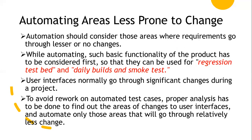We need to automate areas that are less likely to change — that is, concentrate on areas which have less change or no change in requirements. Those areas should be automated first. This includes basic functionality and is useful for regression testing and smoke testing, which mainly focuses on daily builds.